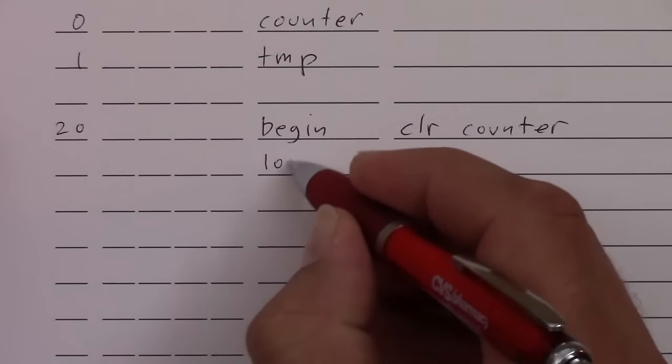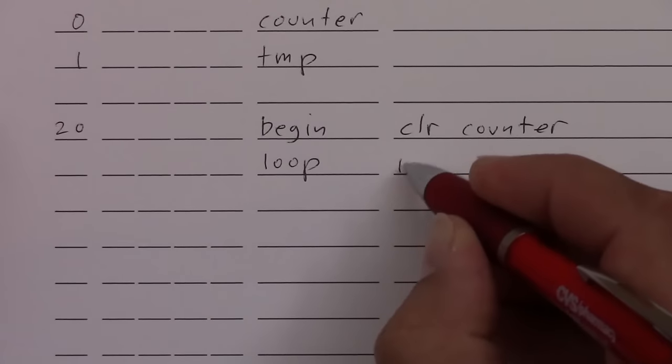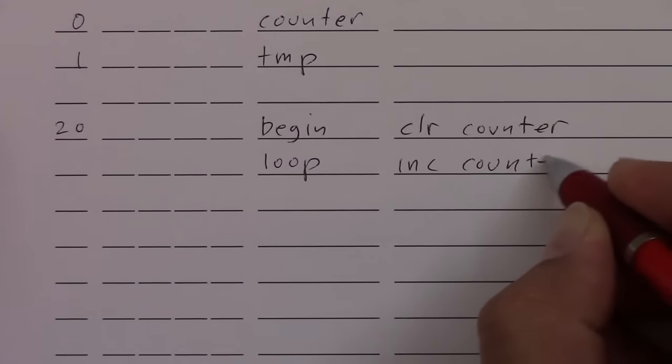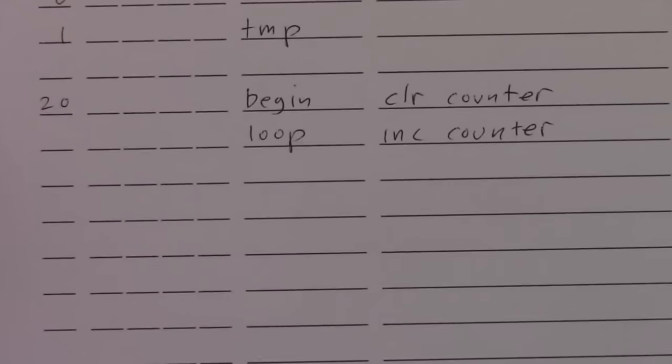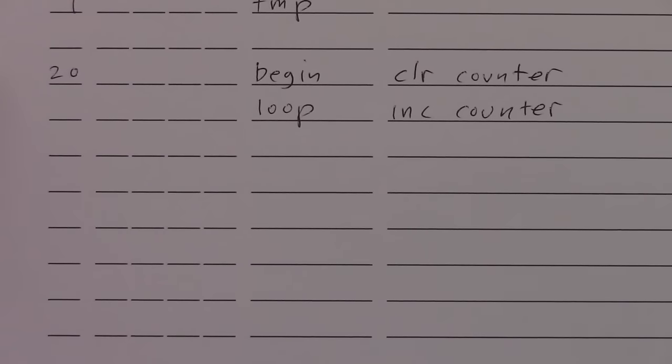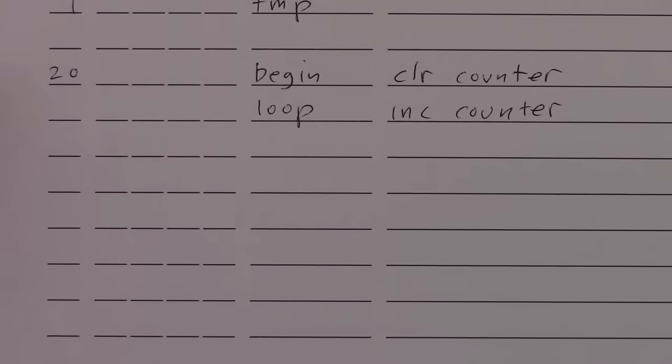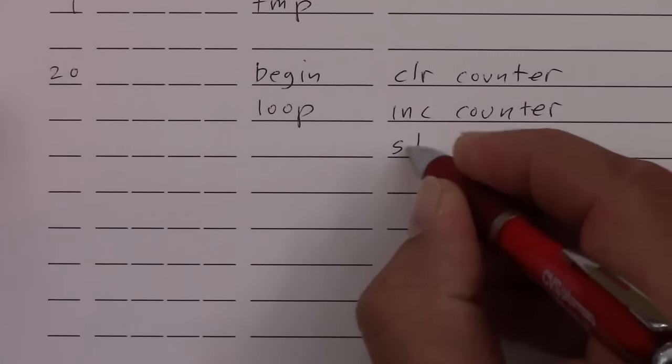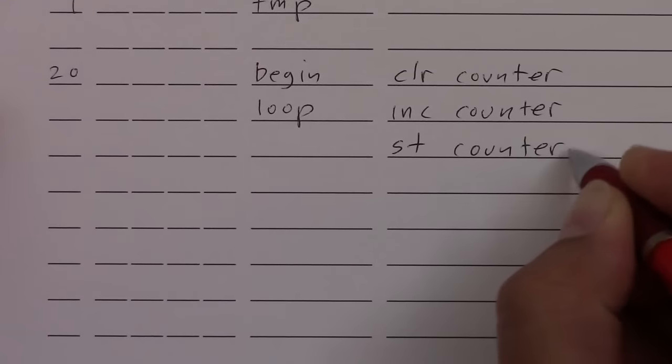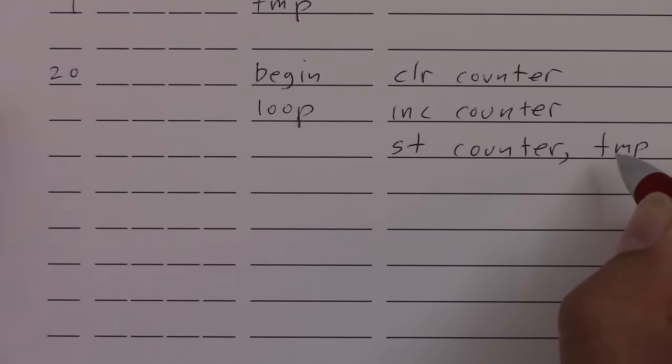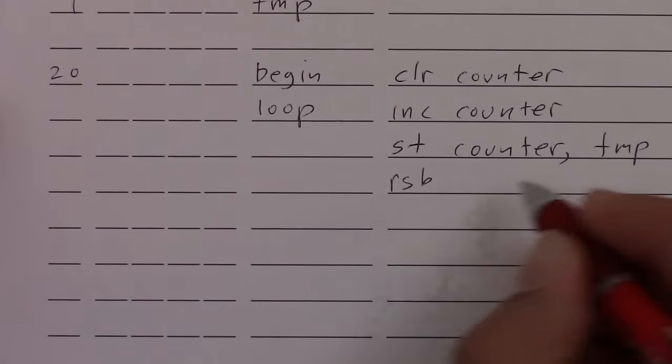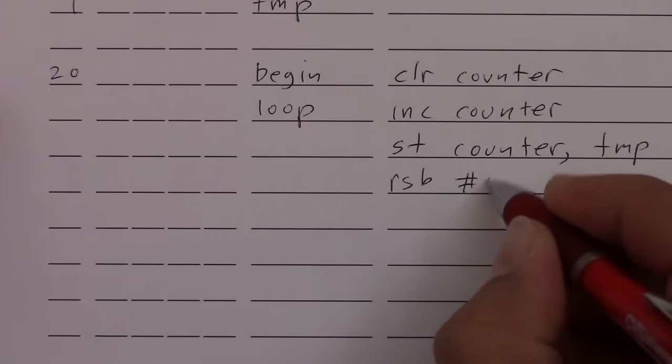Now we're going to have an inner loop. So we'll call this loop. And we'll increment the counter. Now what we need to do next is determine if the loop is done. So we need to compare the counter with some value. So the way to do that is, if you'll notice, there was a subtract instruction, but there was not a compare instruction that discards its subtraction result. So what you have to do is just copy the counter to a temporary variable. Subtract the final counter value that you want from it.